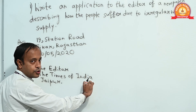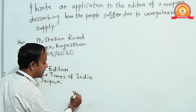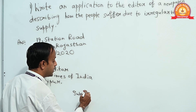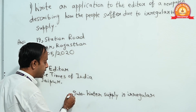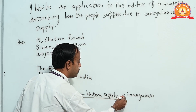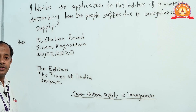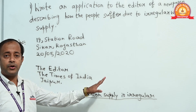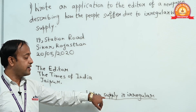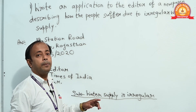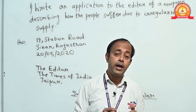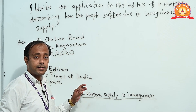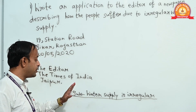After that you have to write the subject. Leave one line and write 'Subject' — S-U-B-J-E-C-T — then write the subject matter. After this you may draw a line using a scale because it will look very good. Write 'Irregular Water Supply' or 'Water Supply is Irregular' — whatever you want. The subject is compulsory for a formal letter, because the person you are writing to may be very busy. If they look at the subject, they will understand what the subject matter is.